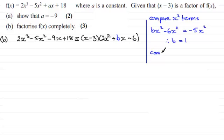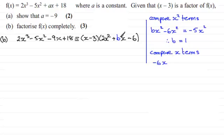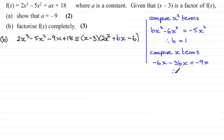Alternatively, we can compare the x terms. We get an x term from x times minus 6, which is minus 6x, and another x term from minus 3 times plus Bx, which is minus 3Bx. These should come to minus 9x. So minus 6x minus 3Bx equals minus 9x, which again gives B equals 1. So just pick one of those methods.